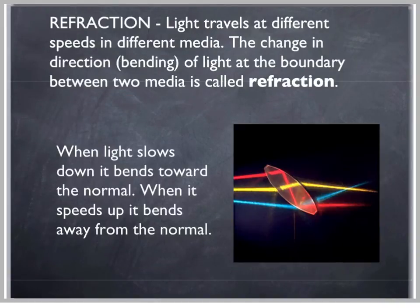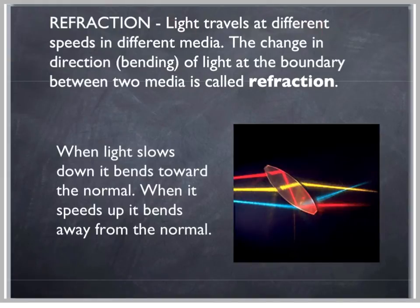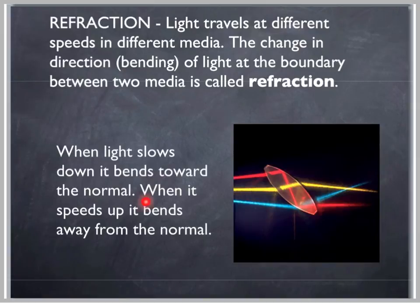To summarize: refraction can be defined as follows. Light travels at different speeds in different media. The change in direction or bending of light at the boundary between two media is called refraction, and it is caused by the fact that light travels at different speeds in different materials. When light slows down, it bends towards the normal — just like in the ripple tank when water waves went from the deep end to the shallow end. When light speeds up, it bends away from the normal.